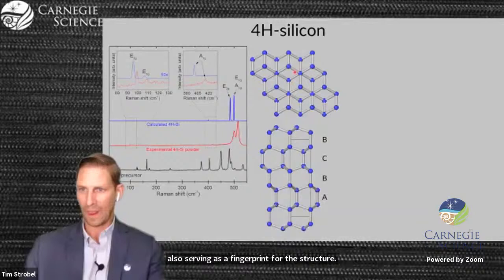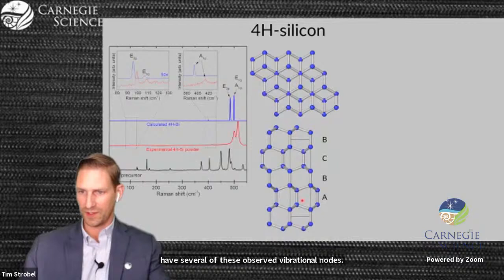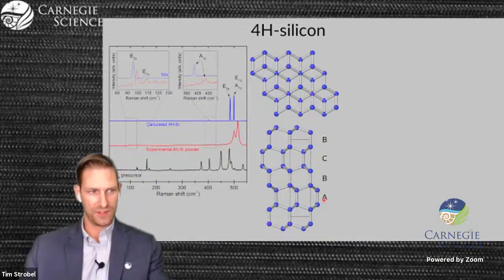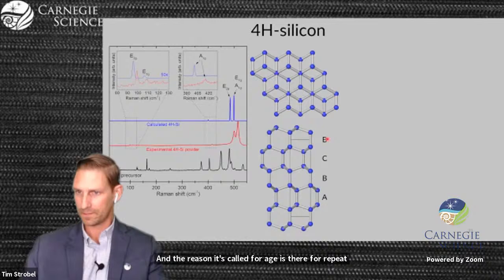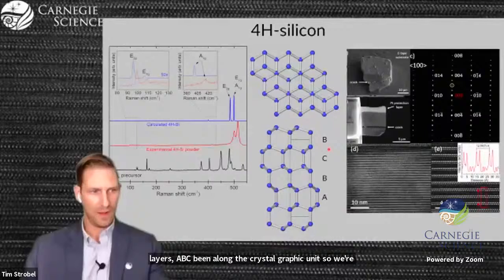In one view of the crystal, you can clearly see the hexagonal symmetry, and the other view, you can see the stacking along what's called the C-axis. The reason it's called 4H is there are four repeat layers, A, B, C, B, along the crystallographic unit cell.